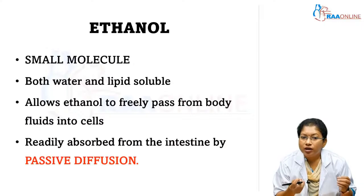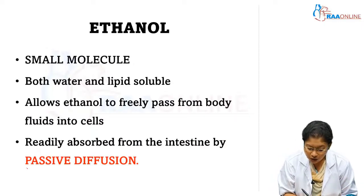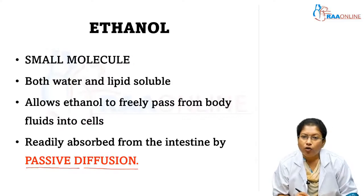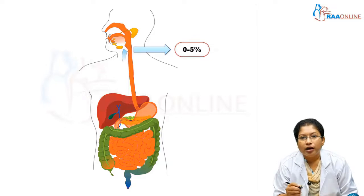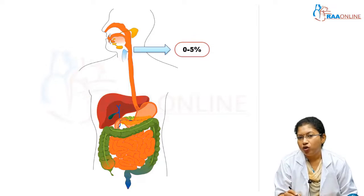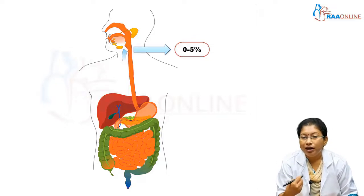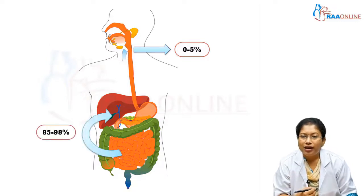Ethanol is absorbed from the intestine by a mechanism called passive diffusion. When it is consumed, 0 to 5 percent of it is absorbed in the esophagus and in the mouth. Mostly, it is metabolized in the liver.